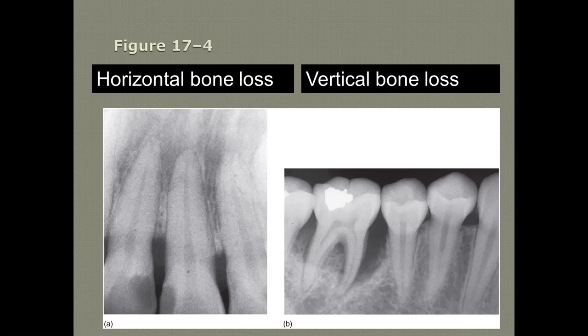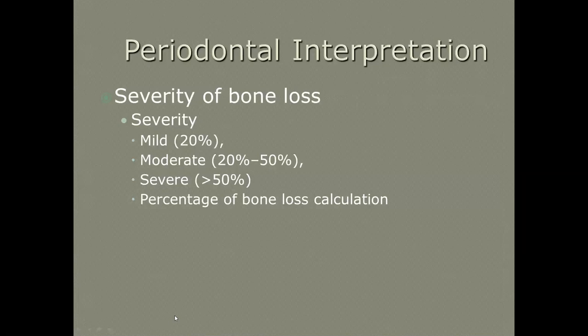Look at picture A as well — you can see there's no nice crestal lamina dura; it looks like cotton candy. You can see the CEJ, and then you have bone that's supposed to be about two millimeters from there, and then from that point there is bone loss. The severity of bone loss — mild, moderate, severe, or advanced — and is it localized or generalized?